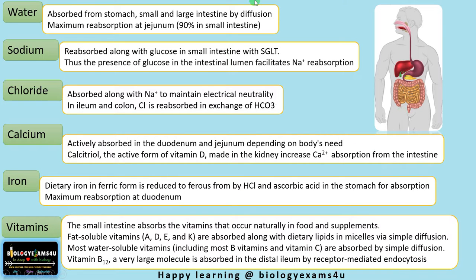Regarding vitamins, the small intestine absorbs the vitamins that occur naturally in food. Fat-soluble vitamins — A, D, E, K — are absorbed along with dietary lipids in micelles via simple diffusion. Water-soluble vitamins including B vitamins and vitamin C are also absorbed by simple diffusion. Vitamin B12, a very large molecule, is absorbed in the distal ileum by receptor-mediated endocytosis.